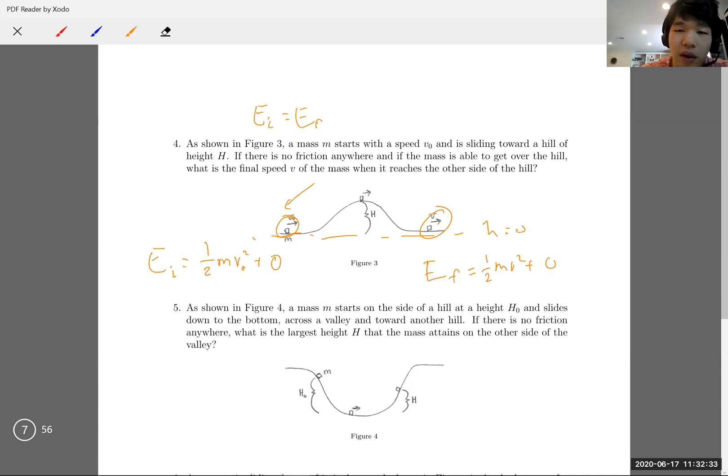So then we get one over two m v naught squared equals one over two m v squared. This gives us v equals v naught. The final speed is going to be the same as the initial speed because of conservation of energy.